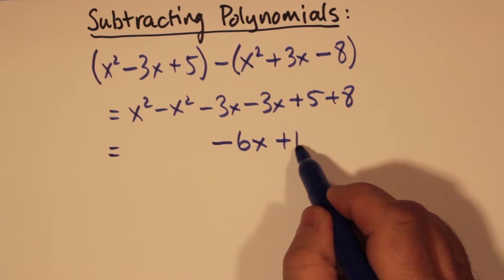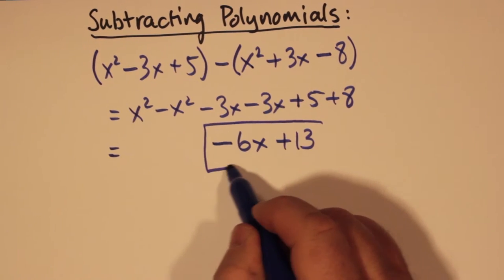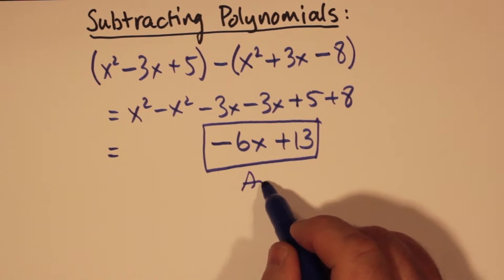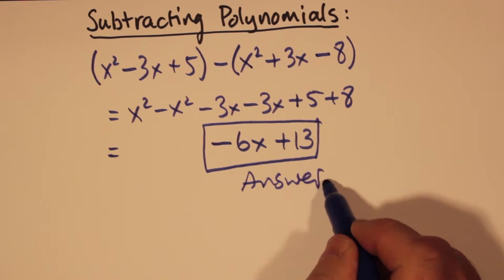And then 5 plus 8 is 13. So the answer, the polynomial you get as a result is negative 6x plus 13.